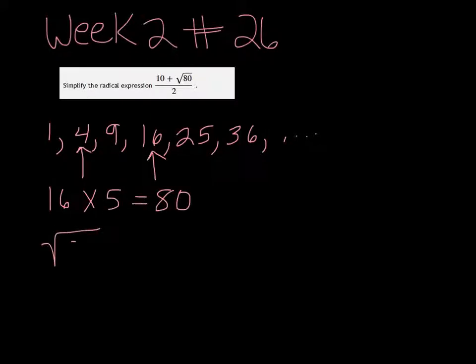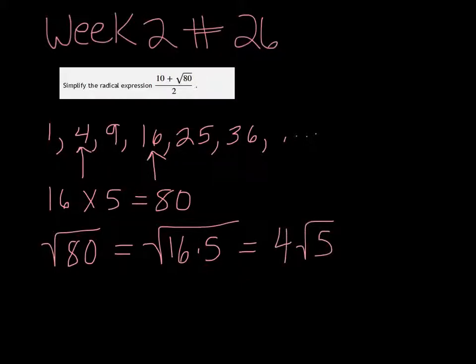So the square root of 80 is the same as the square root of 16 times 5. But the square root of 16 can come out as 4, and you're left with 4 root 5.